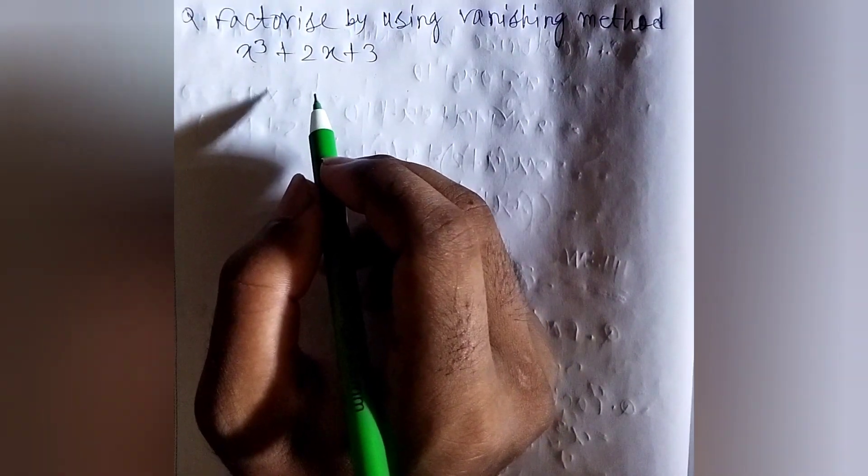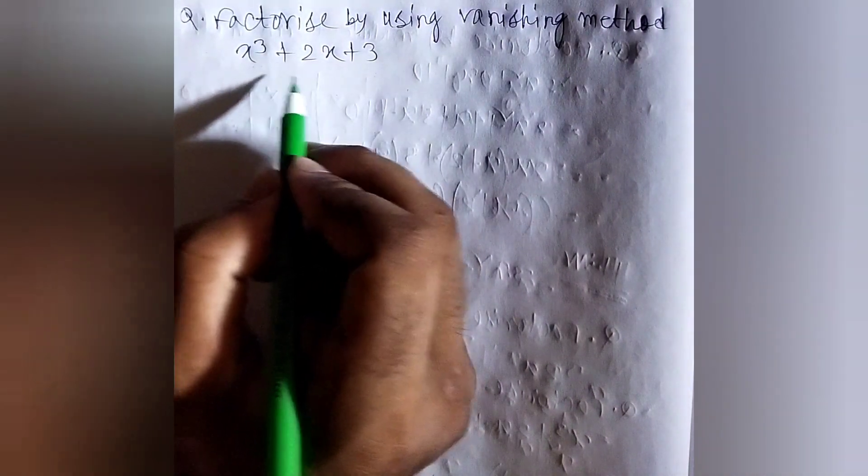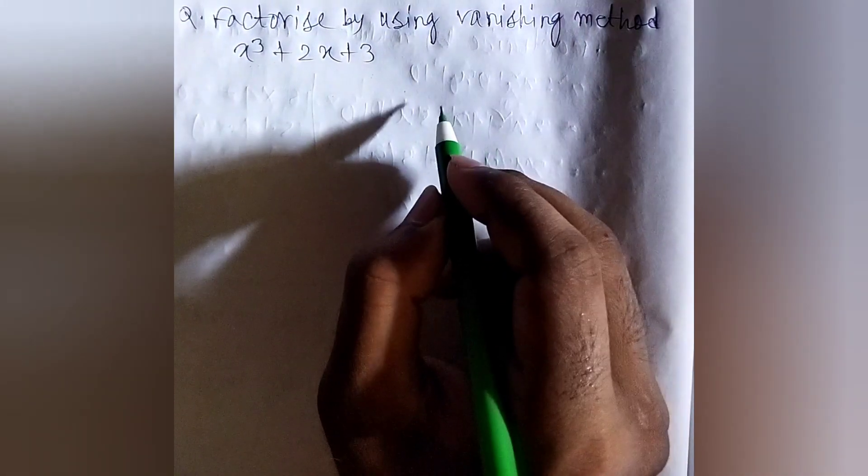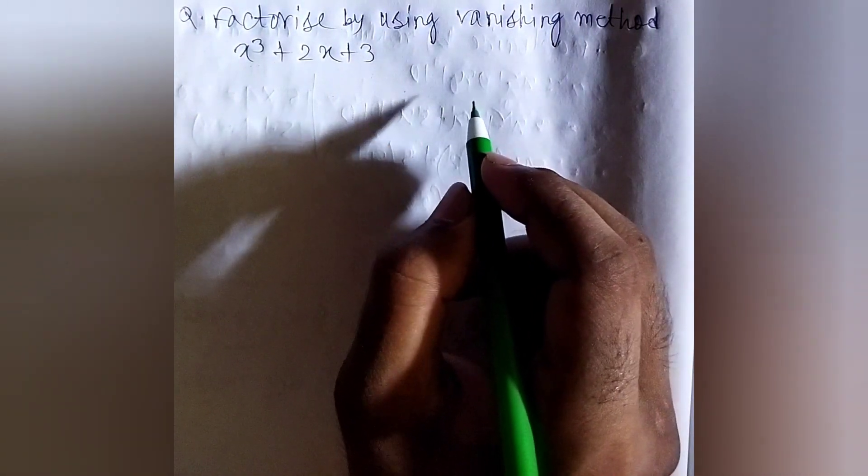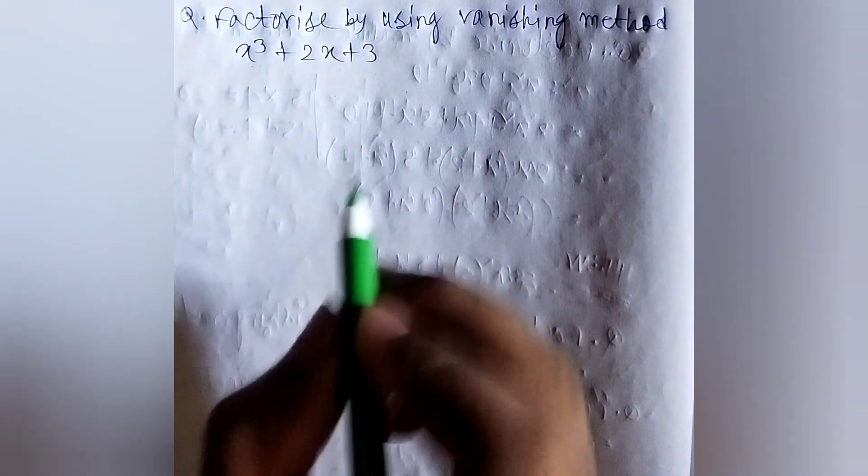So, without any delay, let's start. To factorize this polynomial, we have to take some trial values of x. We have to find out for which value of x this polynomial becomes 0.